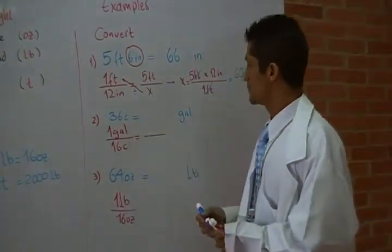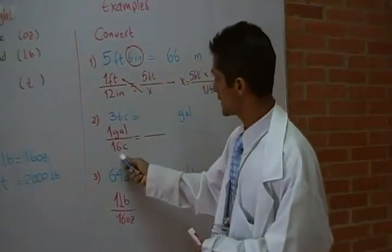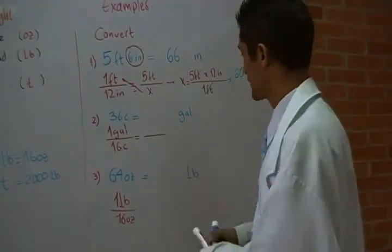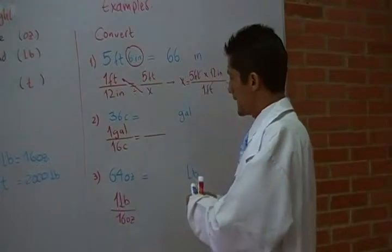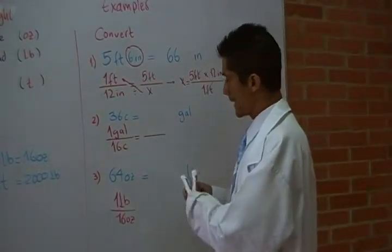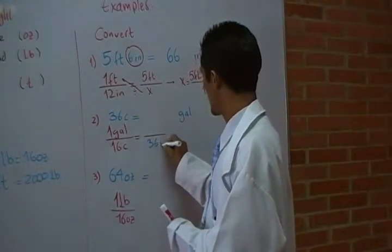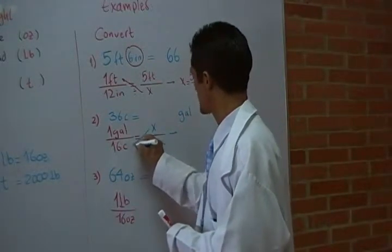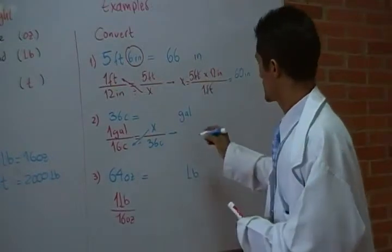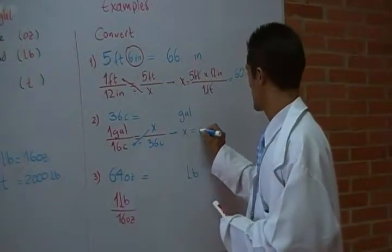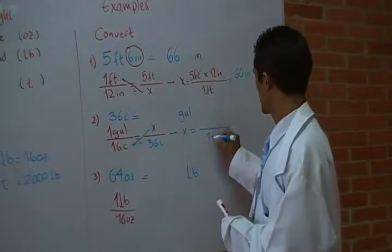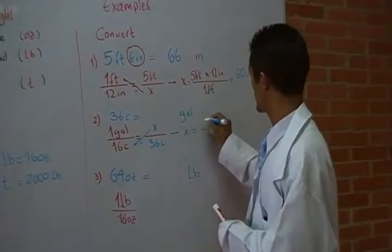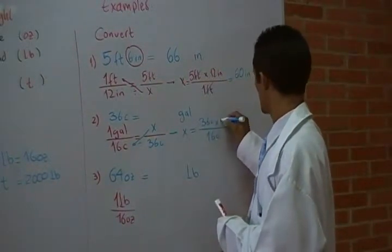In this case, one gallon has 16 cups. Remember, the chart was discussed there. Here, the question is, 36 cups is how many gallons? In this case, 16 is going to divide, so to find X, I'm going to divide by 16 cups, and here I'm going to multiply 36 cups times one gallon.